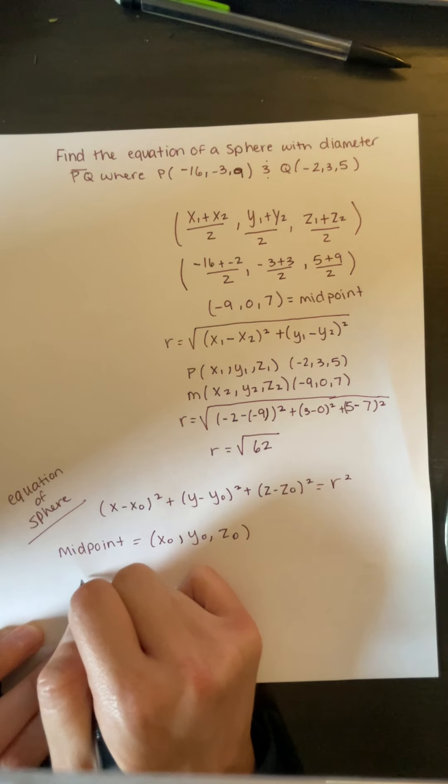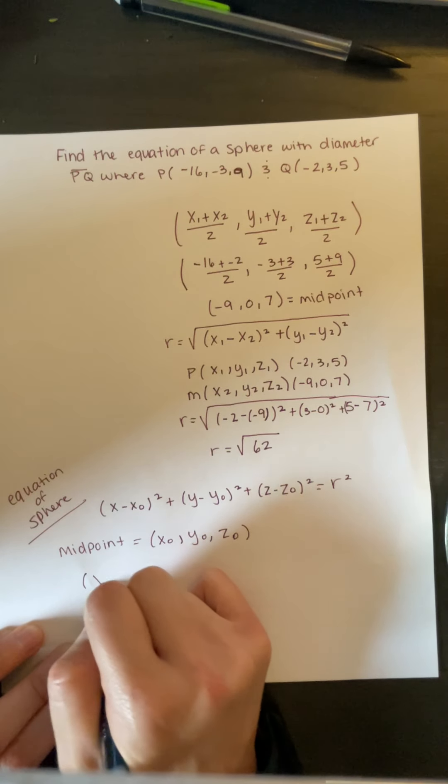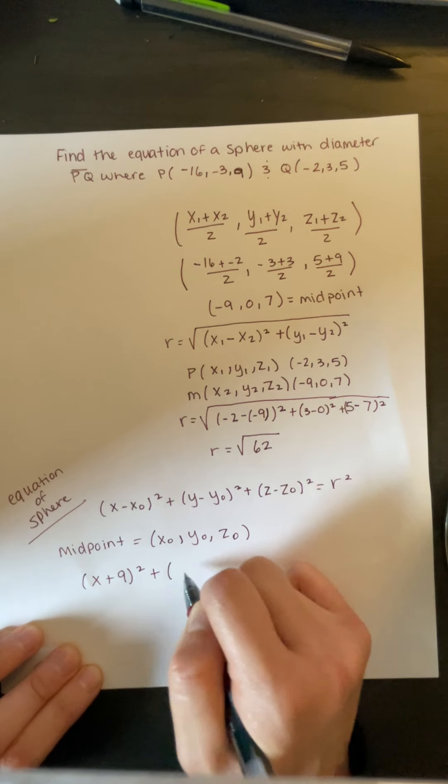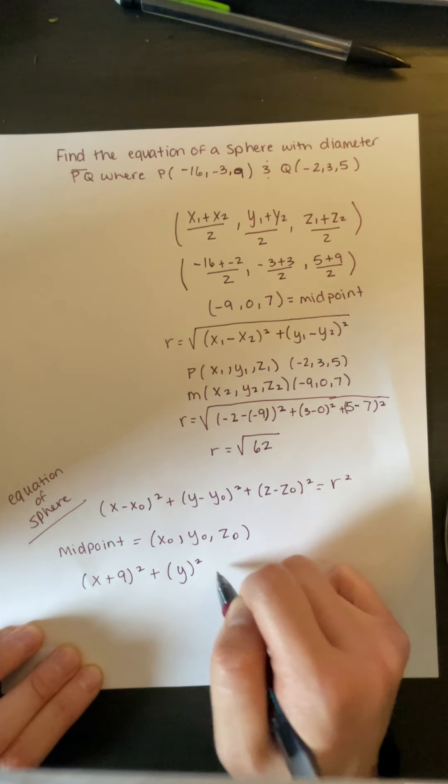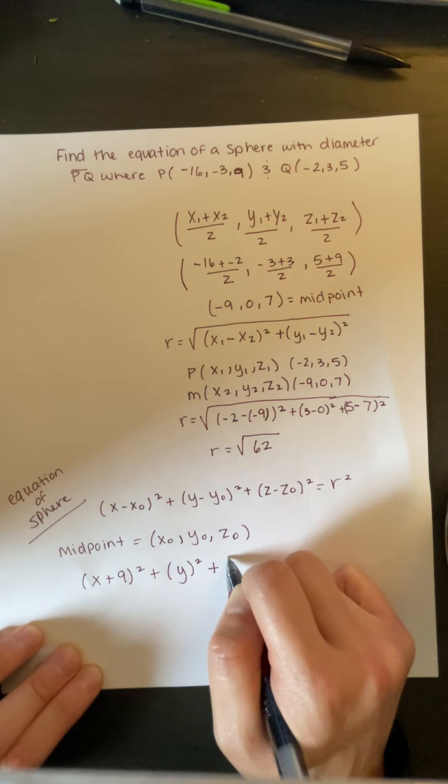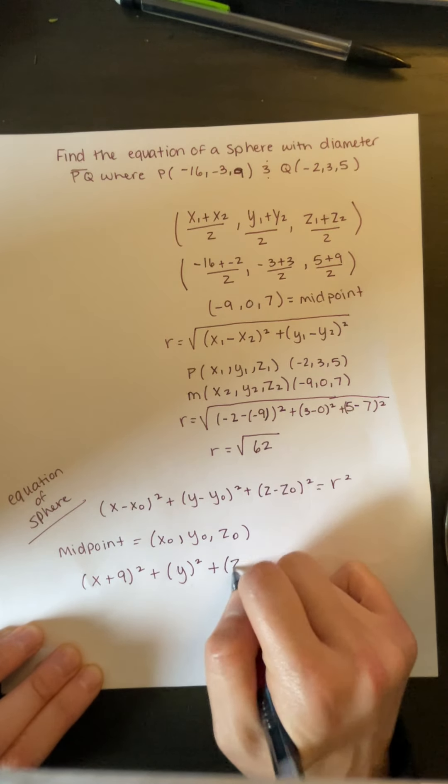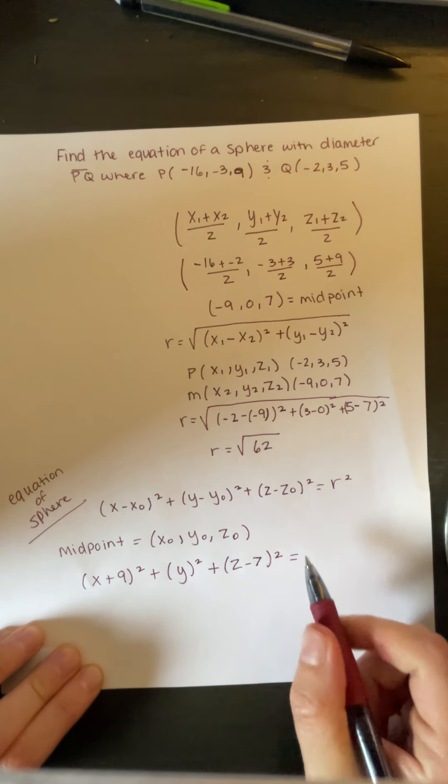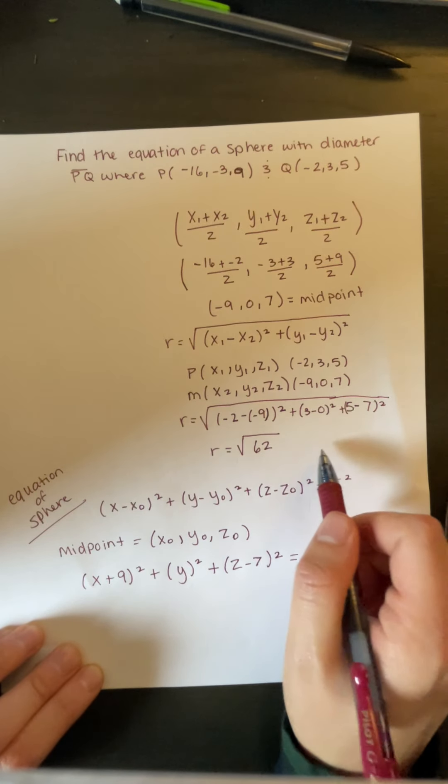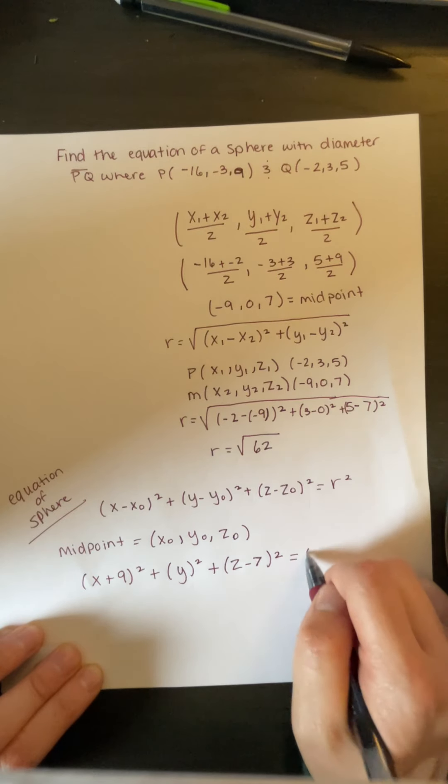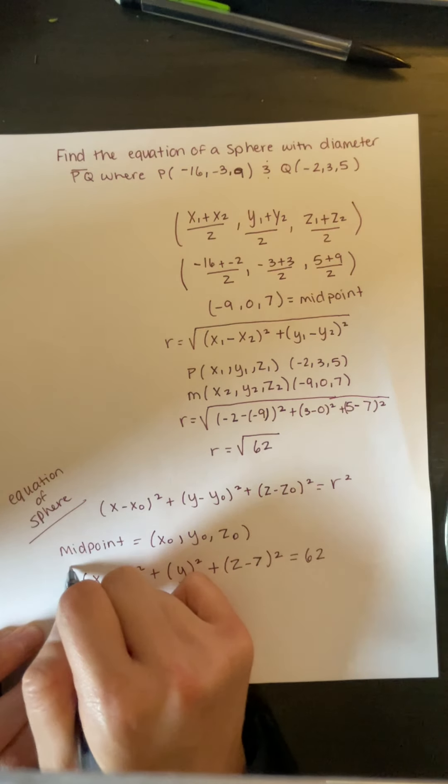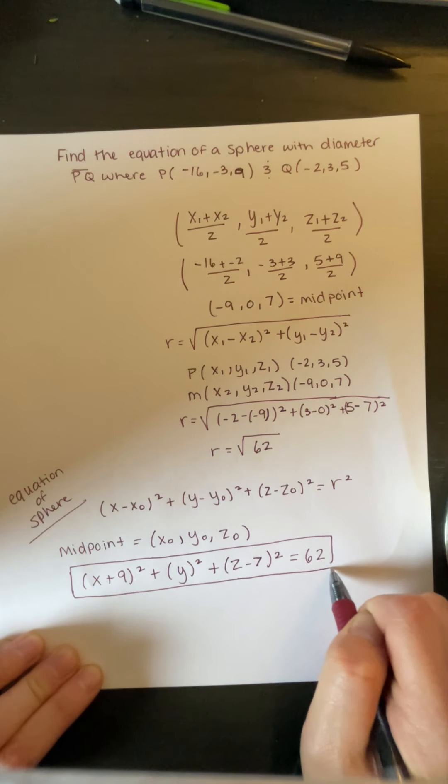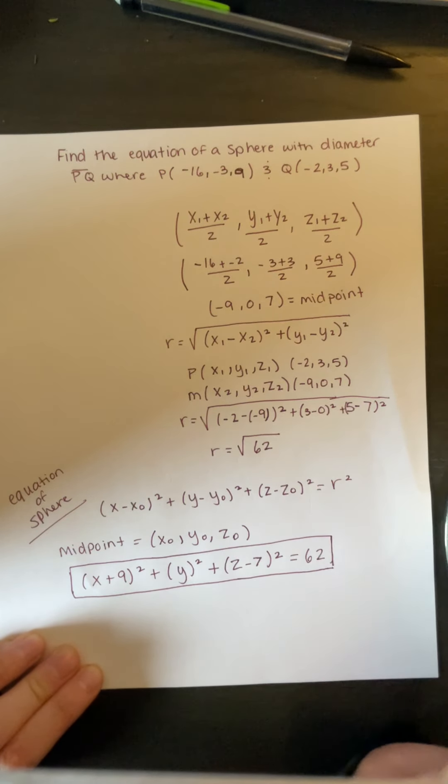So then we end up with x plus 9 squared, plus y squared, plus z minus 7 squared, equals the square root of 62 squared, which equals 62. And that is your final equation of the sphere, given these two points as the endpoints of the diameter.